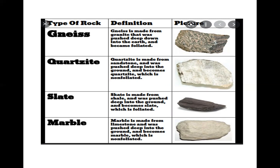Slate forms when shale, which is a sedimentary rock, is put under pressure and high temperature. Slate can be split into layers. Black slates are used to make blackboards and handheld writing tablets. Slates are also used for paving floors and roof tiles.